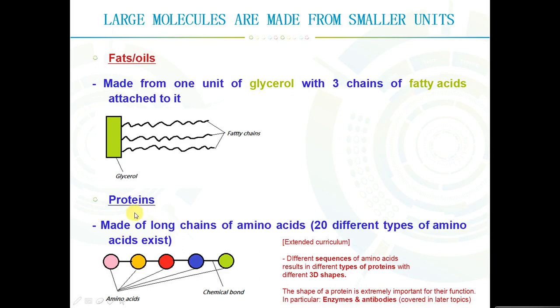Next up is proteins, which is the last of them all. Proteins are made of long chains of amino acids. There are 20 different types of amino acids that exist, and any of them can be used to form a particular chain of protein. If you're doing the extended curriculum, you need to know that different sequences of amino acids result in different types of proteins which have different 3D shapes. The shape of a protein, which is extremely important for their function, is determined by the sequence of amino acids in the chain. This is particularly relevant for enzymes and antibodies, which will be covered in later topics.